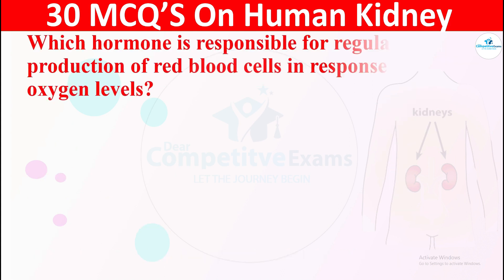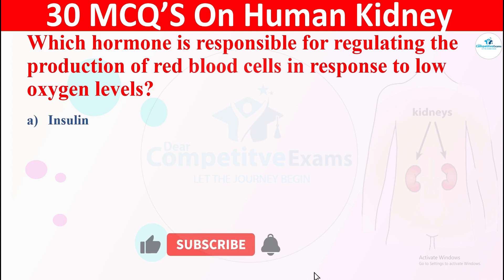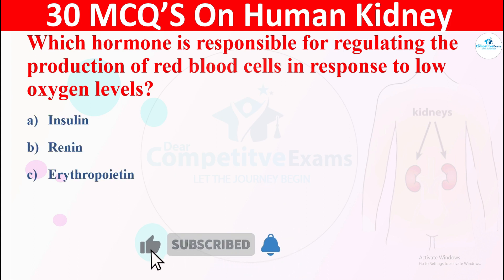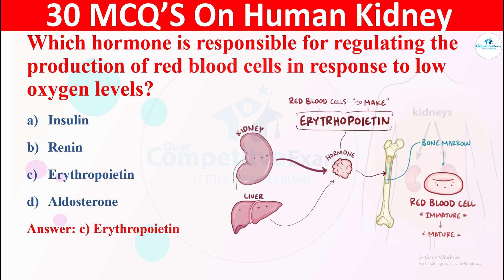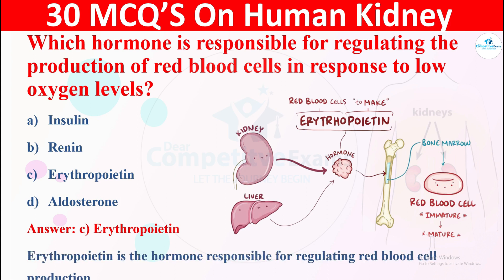Question 6: Which hormone is responsible for regulating the production of red blood cells in response to low oxygen levels? The options are: A) insulin, B) renin, C) erythropoietin, or D) aldosterone. The correct answer is erythropoietin, the hormone responsible for regulating red blood cell production.